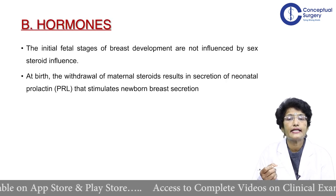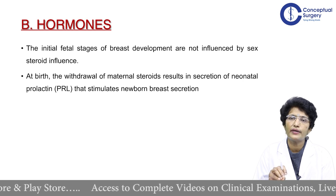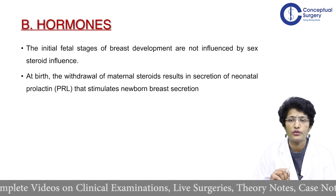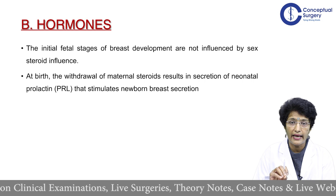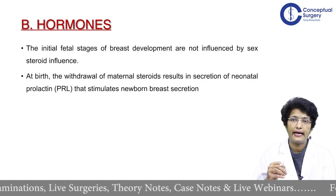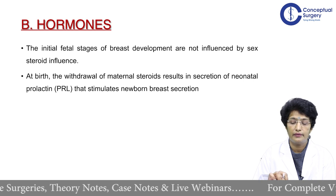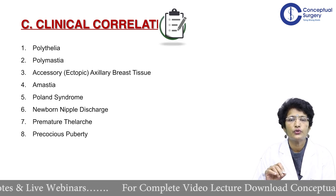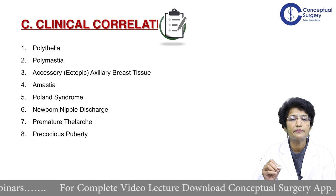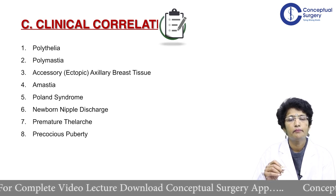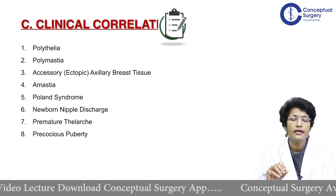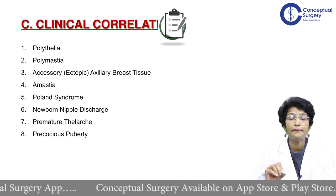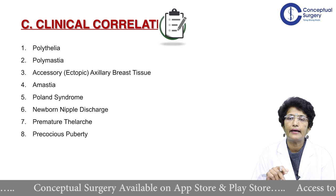The initial fetal stages of breast development are not influenced by sex steroid hormones. At birth, however, withdrawal of maternal hormones results in secretion of neonatal prolactin, which can sometimes present as nipple secretion in newborns. Clinical correlates to be aware of include: polythelia — multiple nipples; polymastia — multiple breast tissues; accessory axillary breast tissue; amastia — absence of breast; Poland syndrome; newborn nipple discharge; premature thelarche; and precocious puberty.